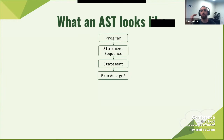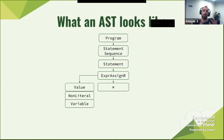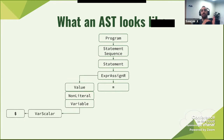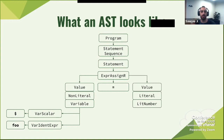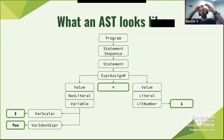It starts with a program. Program has a statement sequence. Within that sequence, there is one statement, which is an expression of assignment — that is 'equals'. On one side of it, there's a value — a non-literal value — which is a variable value, and that is a variable scalar, which is a dollar sign. It also parses to a variable identifier expression, which is 'foo'. On the other side of the equals, you have a value — a literal value — a literal number value, which equals one.